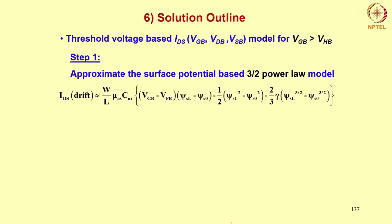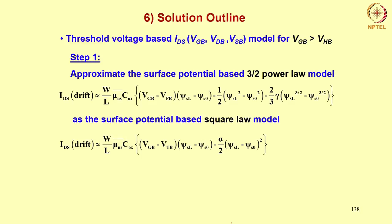Step one of this derivation is to approximate the surface potential based 3/2 power law model as a square law model. You are going to approximate the 3/2 power law model by a square law model. What you find is that Vfb has been replaced by Vtb. Some terms remain as is, and these two terms have been reduced to a square law term. Something from here has gone into this bracket, and therefore Vfb has become Vtb.